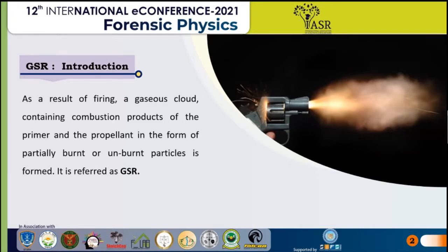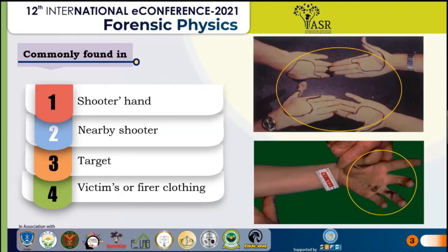Earlier, the appearance of gunshot residue was considered as confirmation that a person had fired the gun. But in recent past, approximately in 2019 and 2020, various researches have been published underlining that the presence of GSR must not be concluded as proof that a person fired; rather, it must be said that the person was present in close vicinity of a firing. It is usually found on the shooter's hand, a person in close vicinity of the firing range, on the target, as well as on the clothing of the victim.